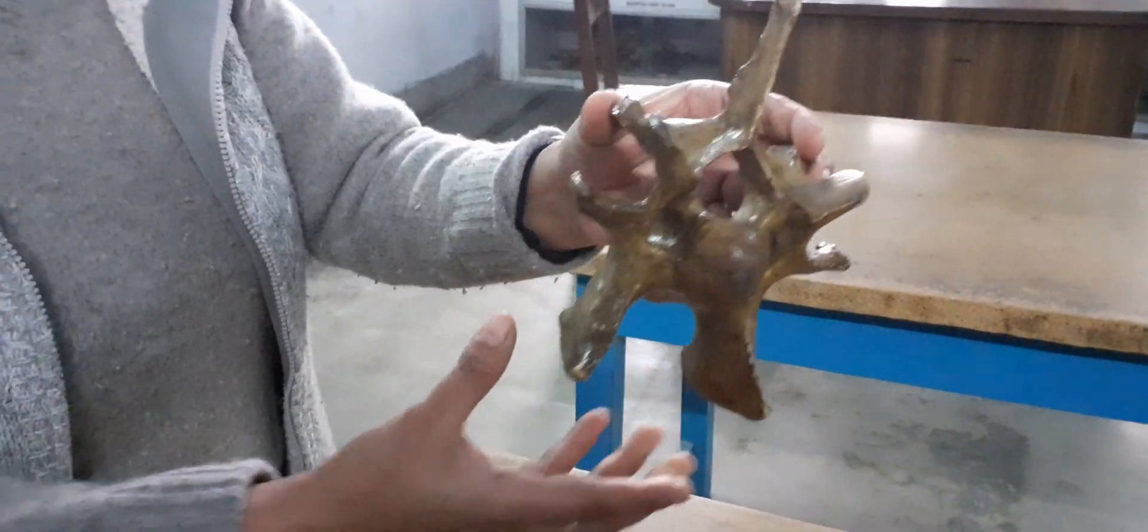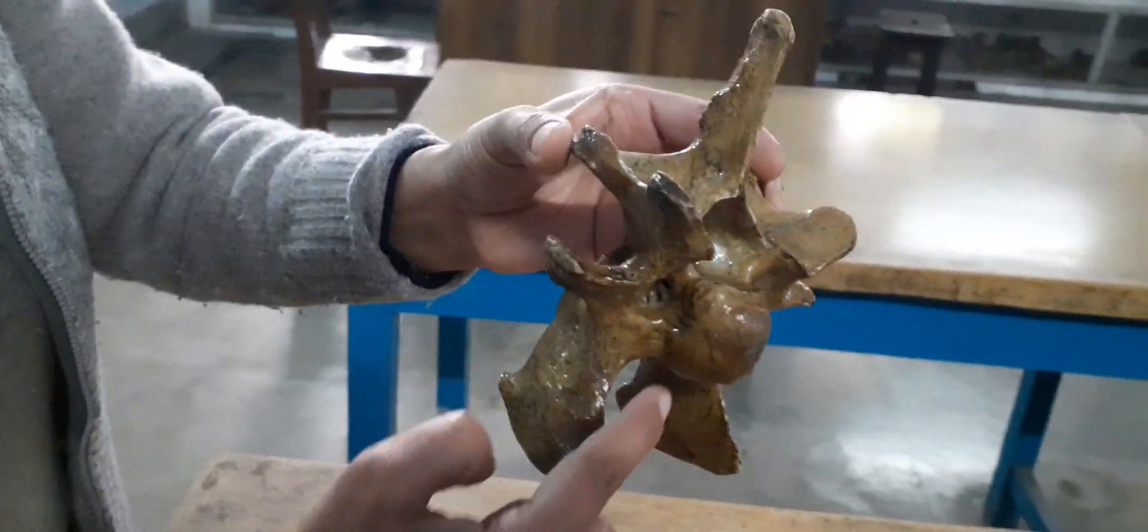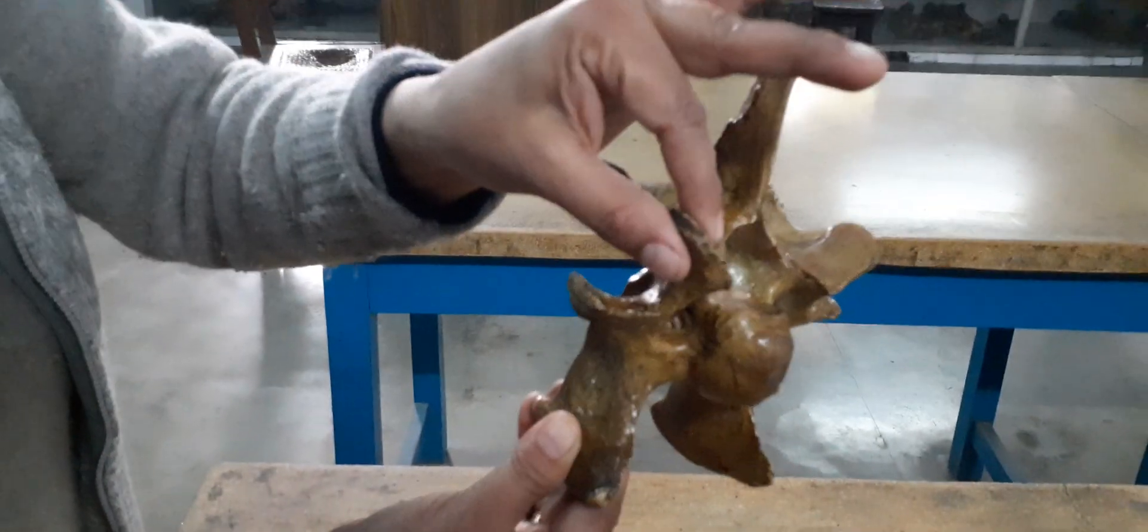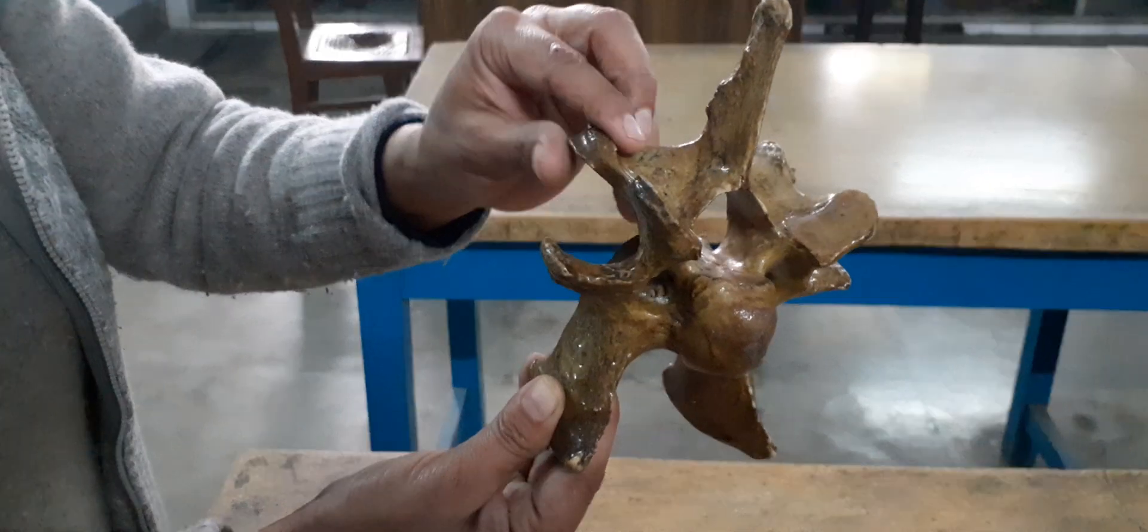Now, if you will see the 6th cervical vertebra, then it is also having this transverse process. This entire is the transverse process. This is the spinous process. This is the anterior articular process. This is the posterior articular process.